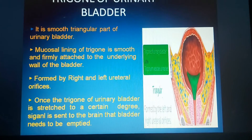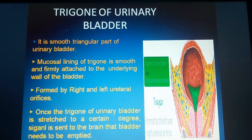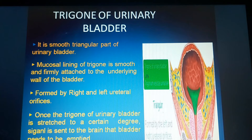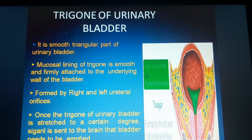The trigone is a smooth, triangular part of the urinary bladder. The mucosal lining of the trigone is smooth and firmly attached to the underlying wall of the urinary bladder. It is formed by the right and left ureteral orifices. Once the trigone is stretched to a certain degree, a signal is sent to the brain that the bladder needs to be emptied.